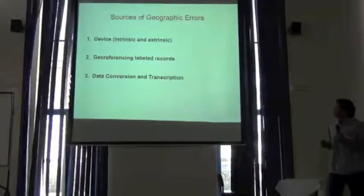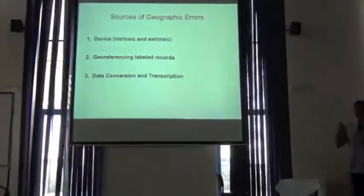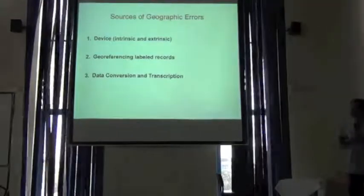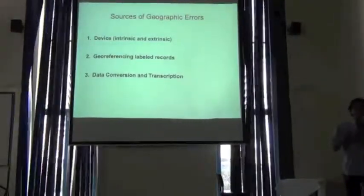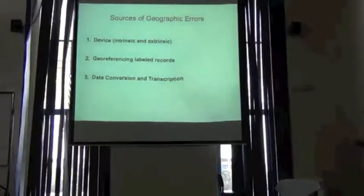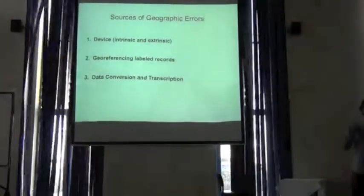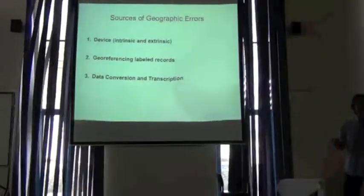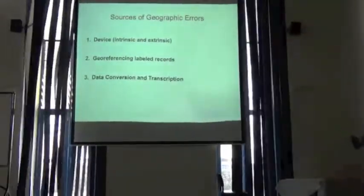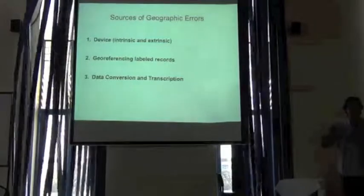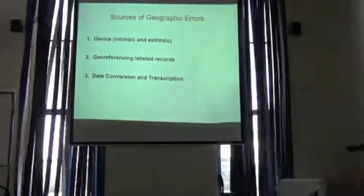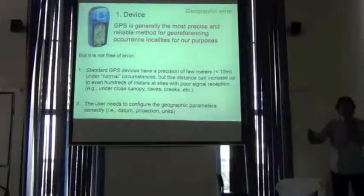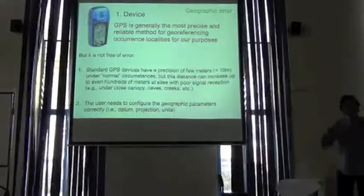The sources of geographic errors come from three different parts. First is the device. Second, if you are georeferencing from labels on museum specimens. And also when you are manipulating your data and converting between different units, or when you are transferring your information from one database to another, you can introduce errors. Let's look at each one of these and then we will see how to correct them.